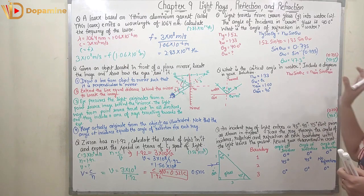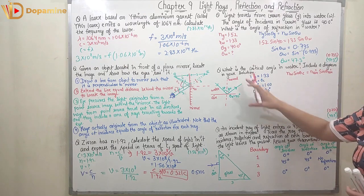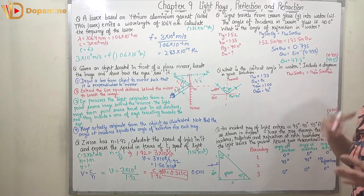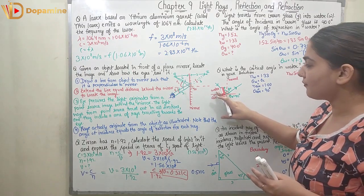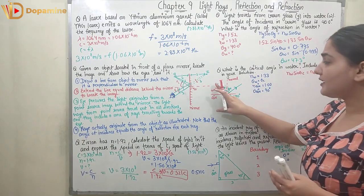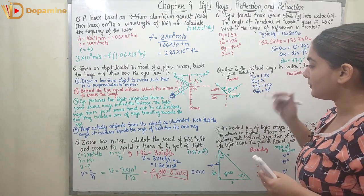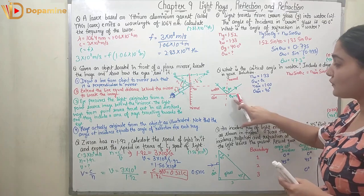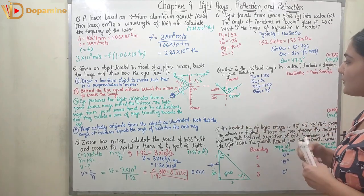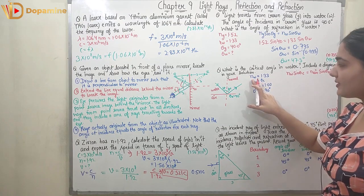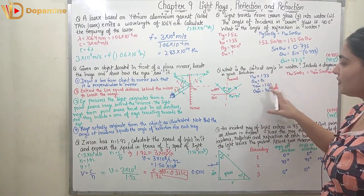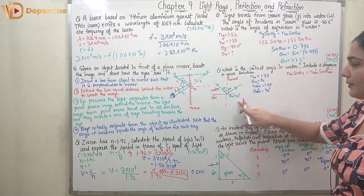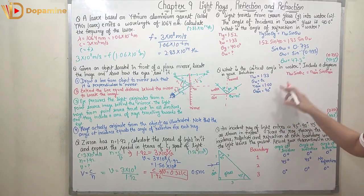Coming to the next question: what is the critical angle in water? Include a diagram in your solution. For finding the critical angle, we consider light traveling from a denser medium (water) to a rarer medium (air). The critical angle is the angle at which the refracted ray in the rarer medium becomes 90°, so θ_air = 90°. The refractive index of water is 1.33 and of air is 1.